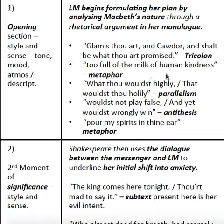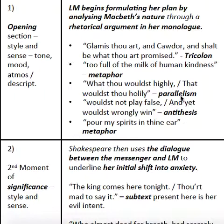Then the parallelism, 'What thou wouldst highly, that wouldst thou holily' — that phrase that was so thorny when we were looking at it in the discussions — is an example of parallelism. Here she's trying to create a sense of balance to expose his hypocrisy so that she has a reason to interfere with his life. The antithesis, 'would not play false, and yet wouldst wrongly win' — the fact that Macbeth won't cheat but would win wrongly is antithetical. Opposing ideas in the same statement, again exposing the flaws in his thinking, that give her a reason to interfere.